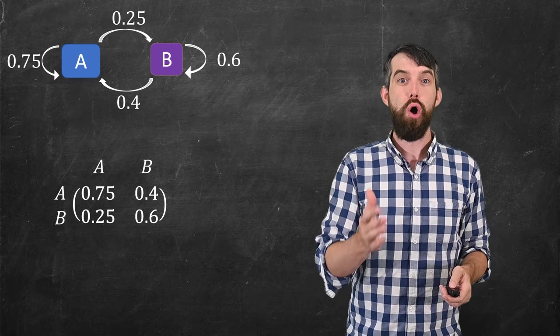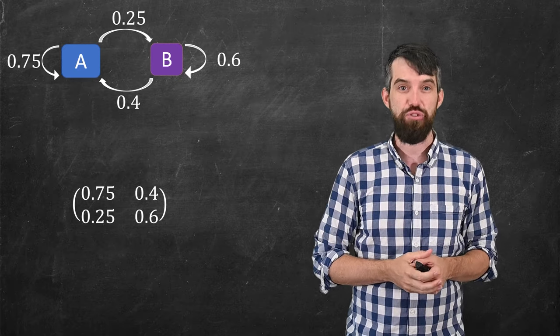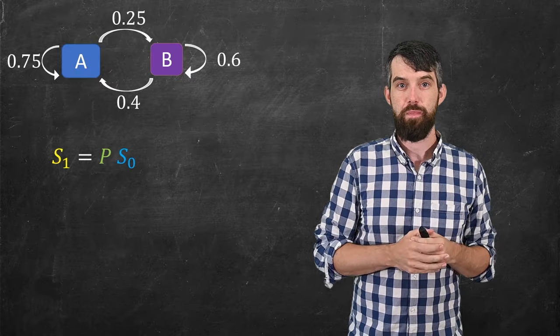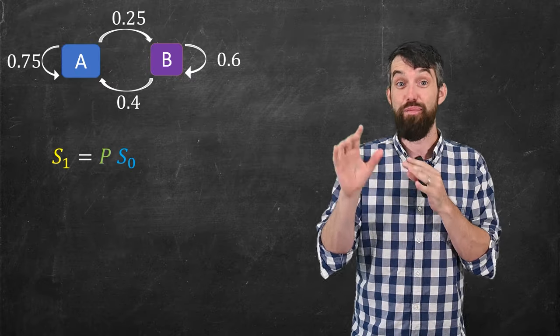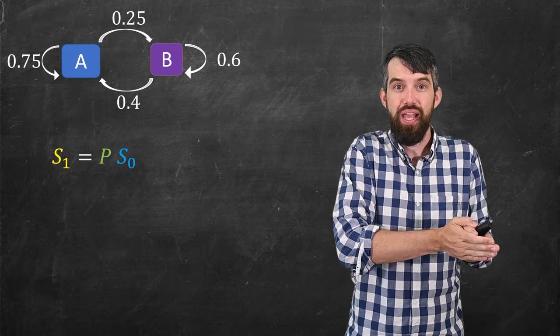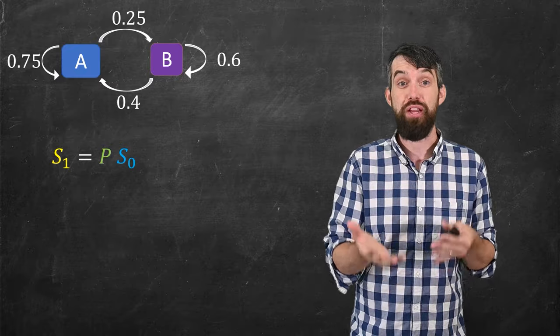This type of matrix is called a transition matrix, and we often just write it as P for the transition matrix. Now, here is the magic of matrix algebra. The formula to go from S0 to S1 is just multiplying by this matrix P.